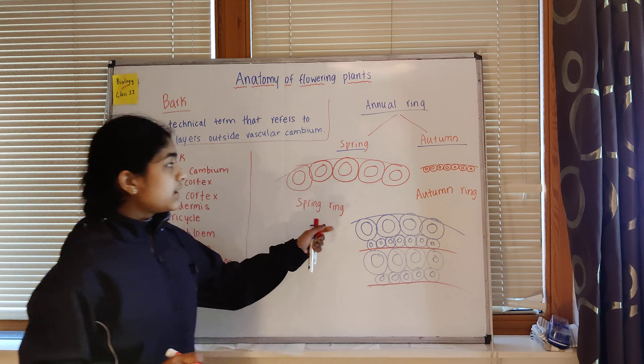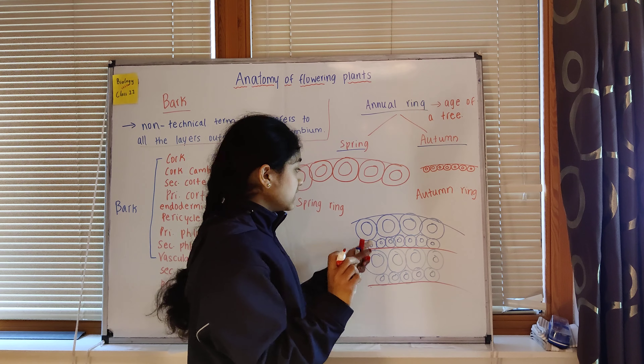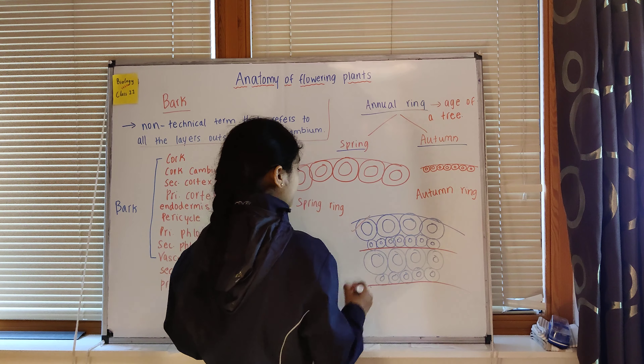Spring conditions are very favorable, autumn conditions are not that favorable, that's why the vessels are very small. If you want to know the age of a tree, you can easily count the annual rings. Annual rings give us the age of a tree. As the years go on the tree becomes thicker because more annual ring layers are being formed.